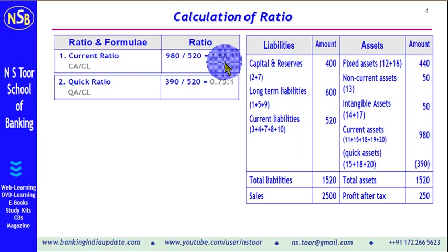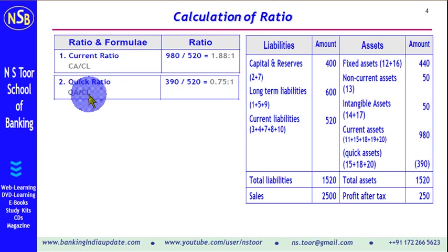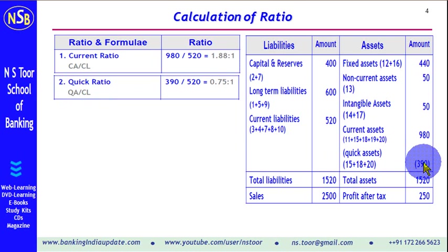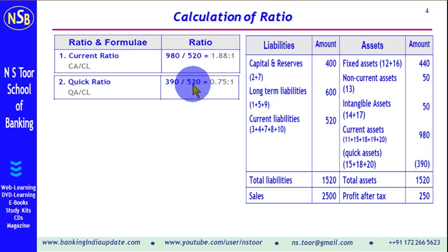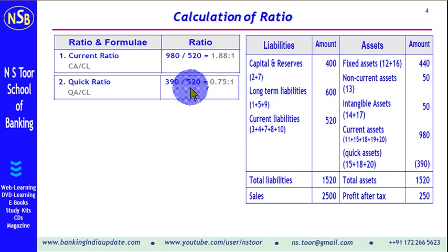Quick ratio, also known as the acid test ratio, is calculated as quick assets divided by current liabilities. Quick assets are 390 and current liabilities are 520, giving a ratio of 0.75:1. There is no benchmark for this ratio.